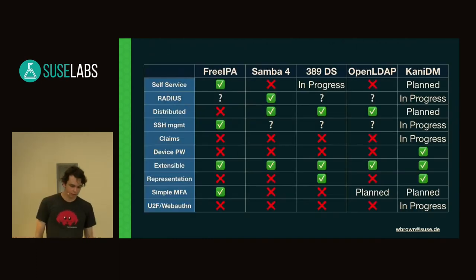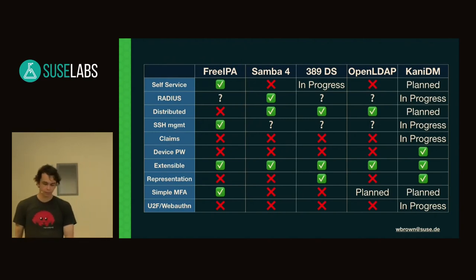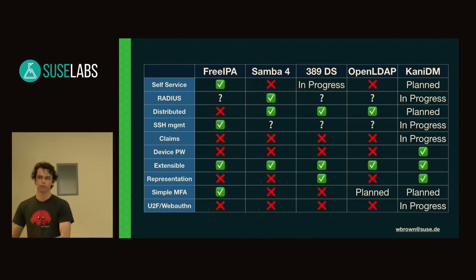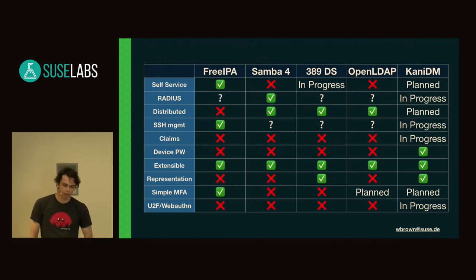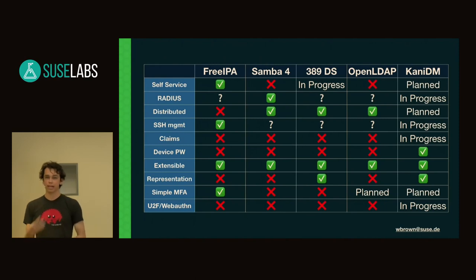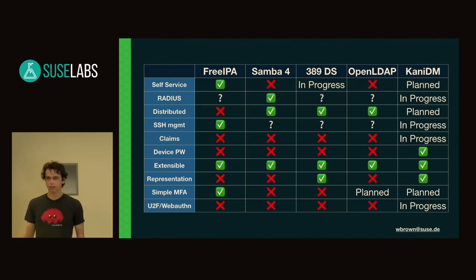When I throw this up on my scorecard, it makes me a bit more excited. While there are a lot of things in the planned areas — planning a self-service portal, planning the replication system, planning simple MFA — I've already started to take steps on how we're going to do replication and distribution for multi-master asynchronous replication. RADIUS support already has some of the parts in place. SSH management and claims both already have some of the handles in the database needed. The access controls will actually respect the claims so they all interoperate nicely. And WebAuthn — there's a reason why I'm the author of the WebAuthn libraries for Rust: I want to use it for this.